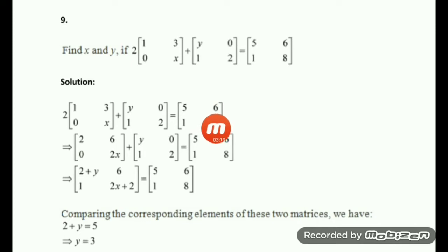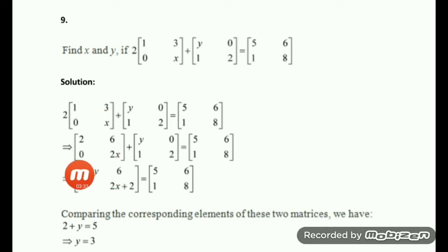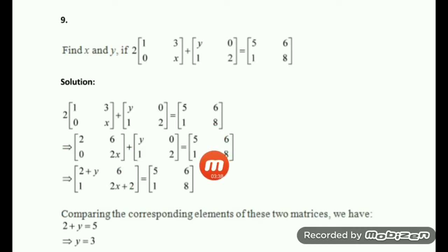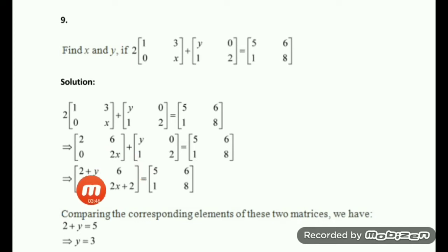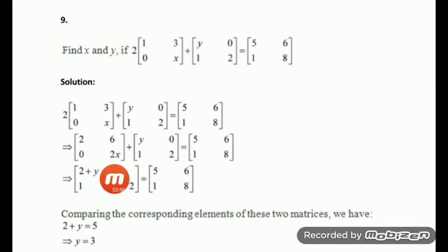We will go step by step. First, do the scalar multiplication. By doing scalar multiplication it will become: 2 into 1 is 2, 2 into 3 is 6, 2 into 0 is 0, and 2 into X is 2X. Keep the second matrix as it is. Now I will combine these two matrices into one using addition of matrices so we can compare in the next step.